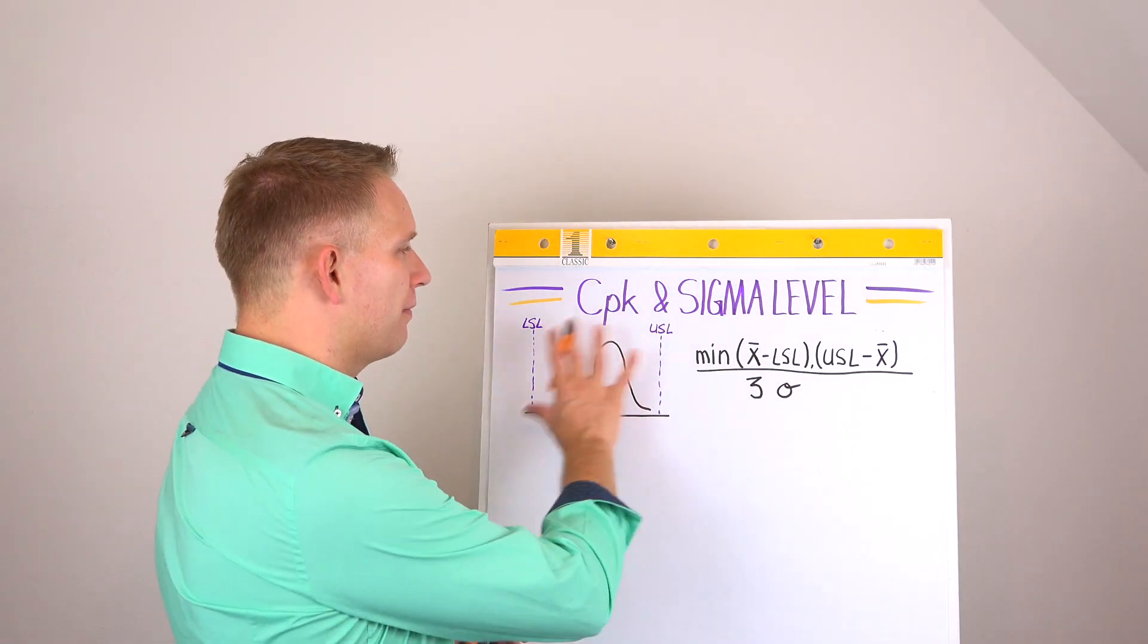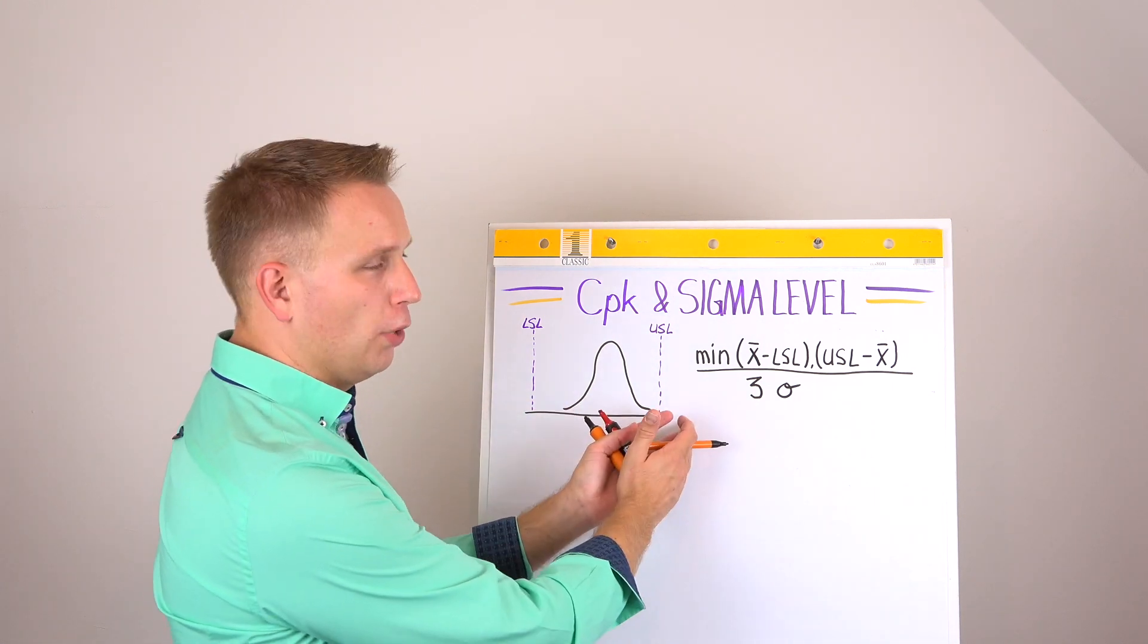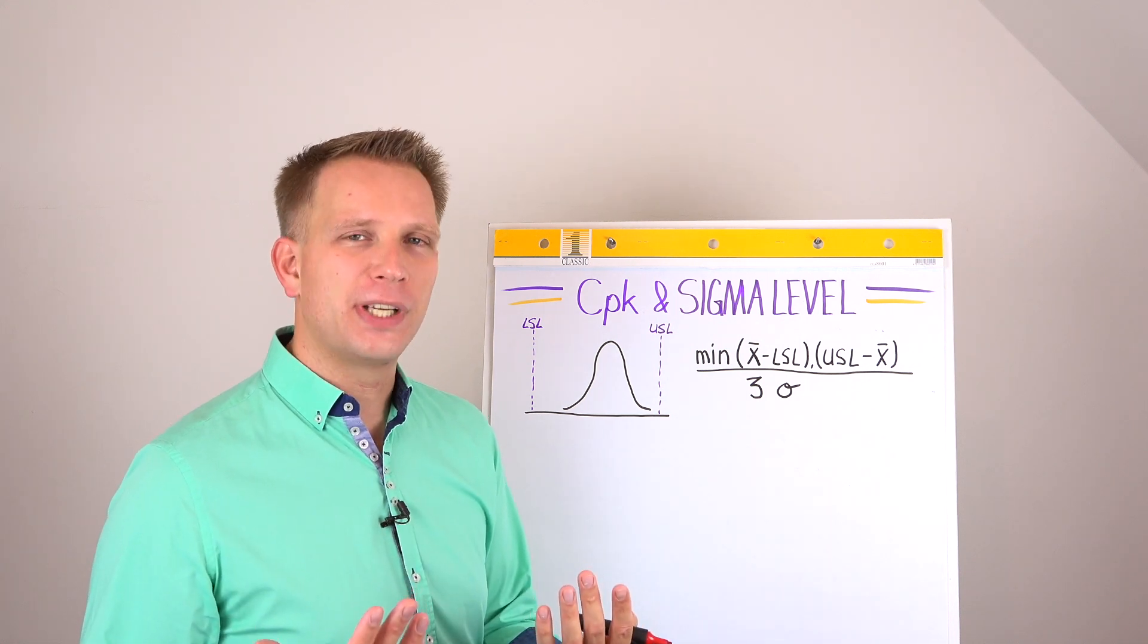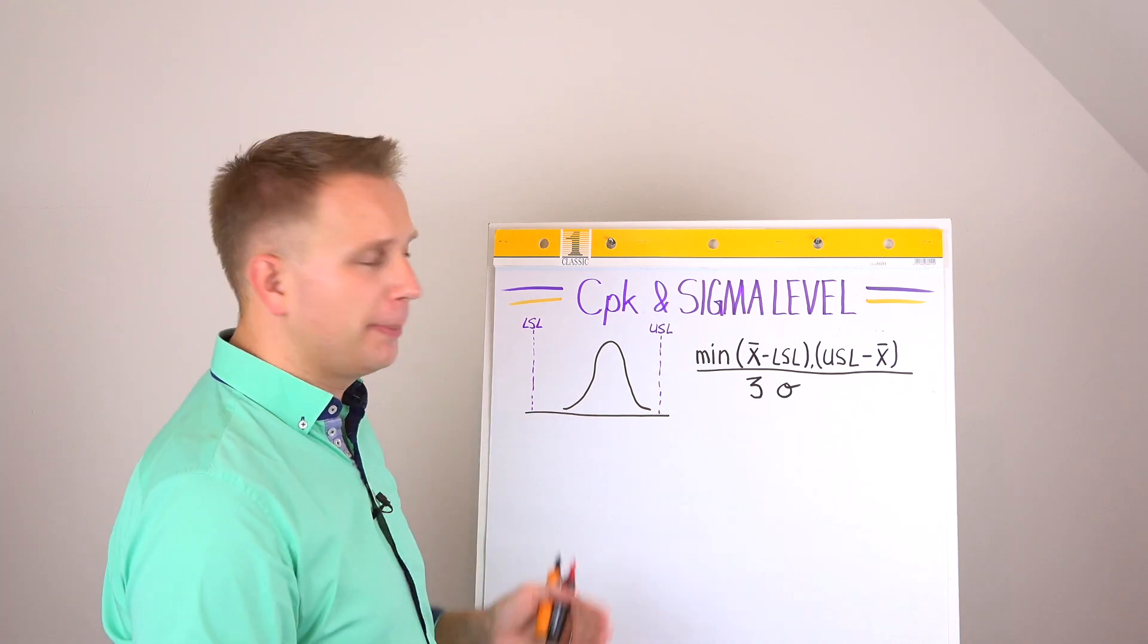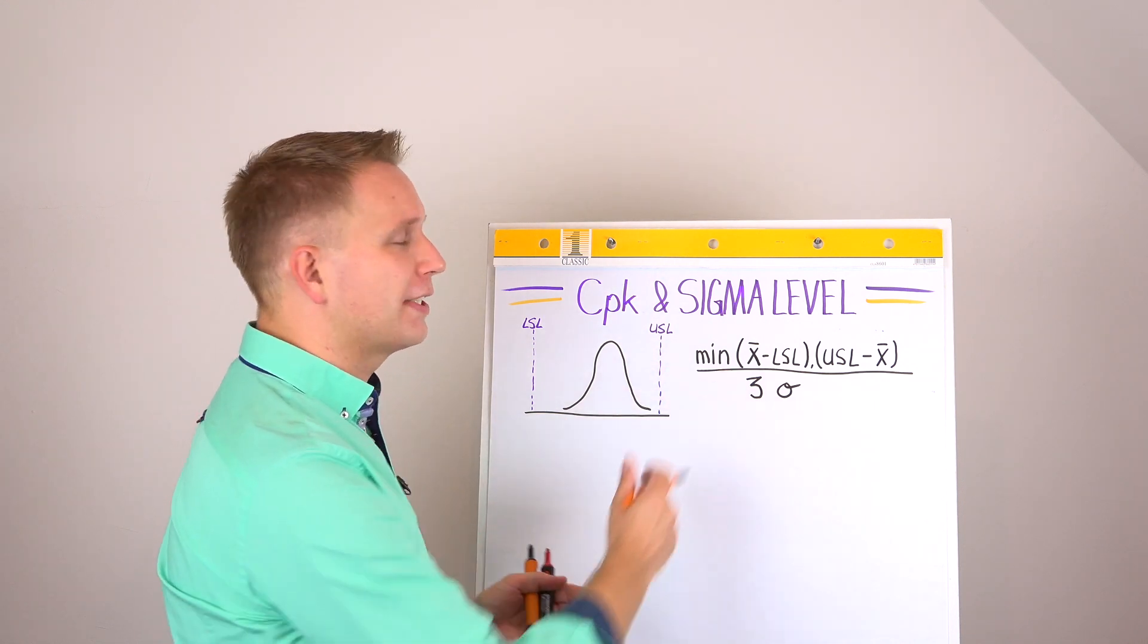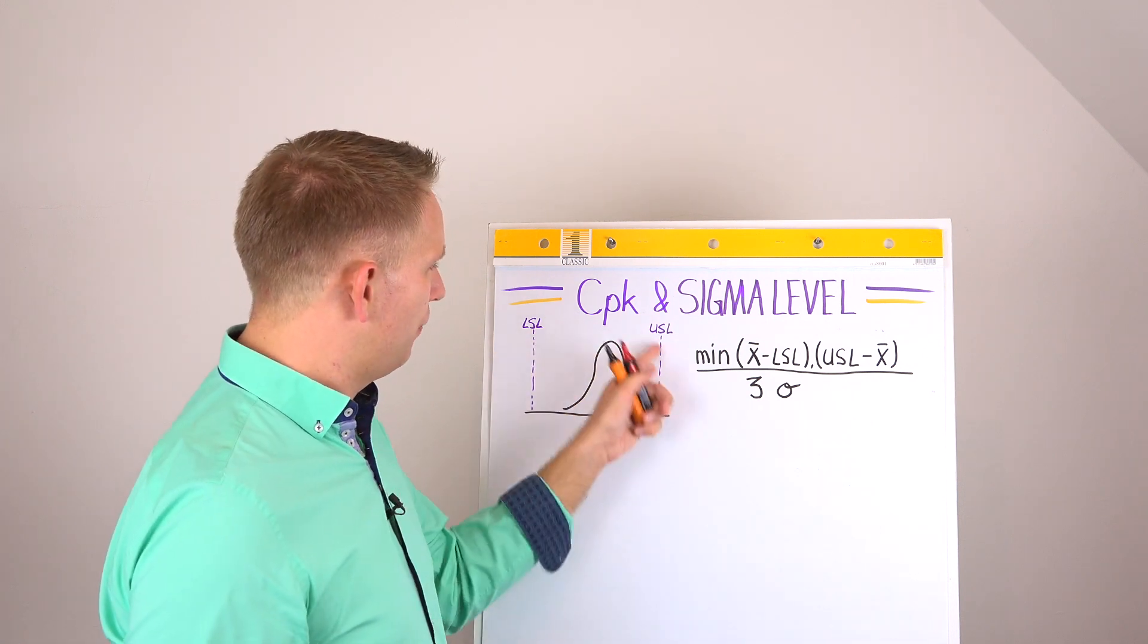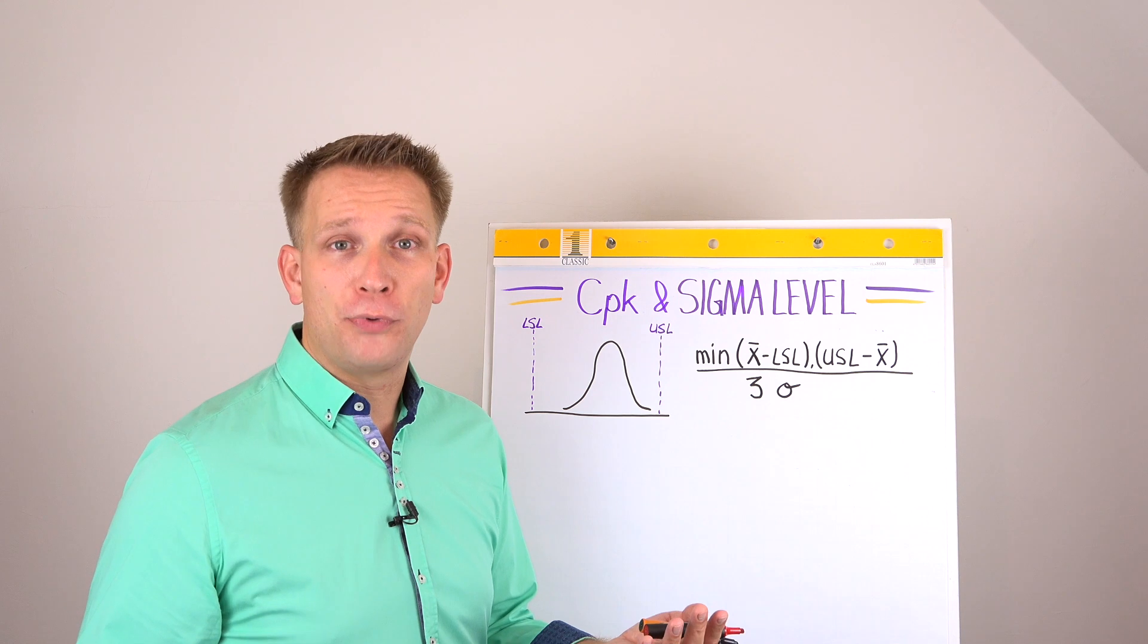First off, we have a product with a certain parameter where it can score low or high, and it should fall between our specification limits. So for this parameter, we have a lower specification limit - our product should not be lower than that, then we have a defect. And an upper specification limit - if it goes over this limit, we also have a defect. So basically any product that falls between your lower and upper specifications is a good product.